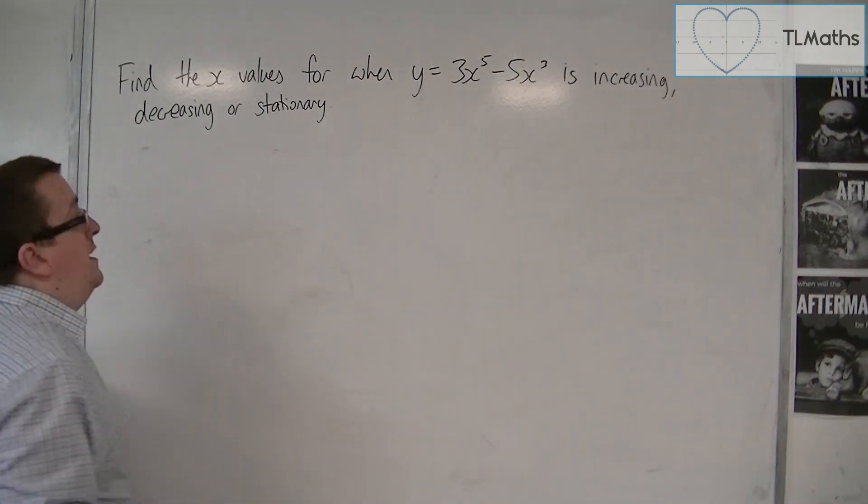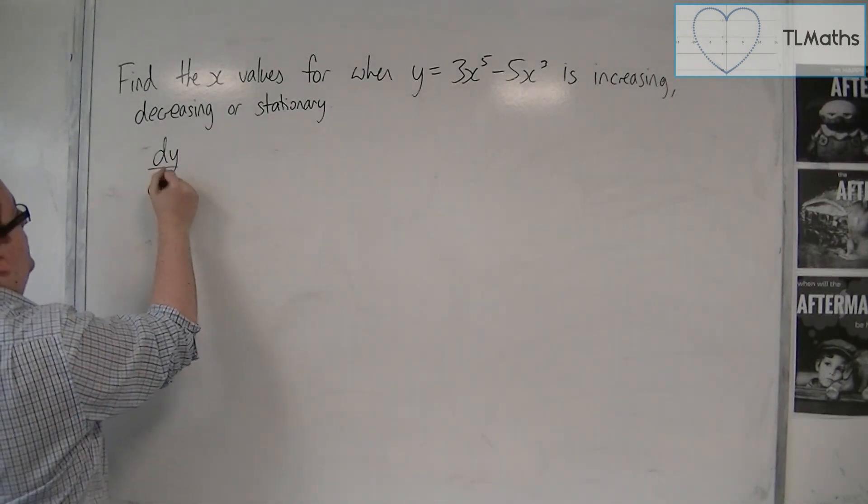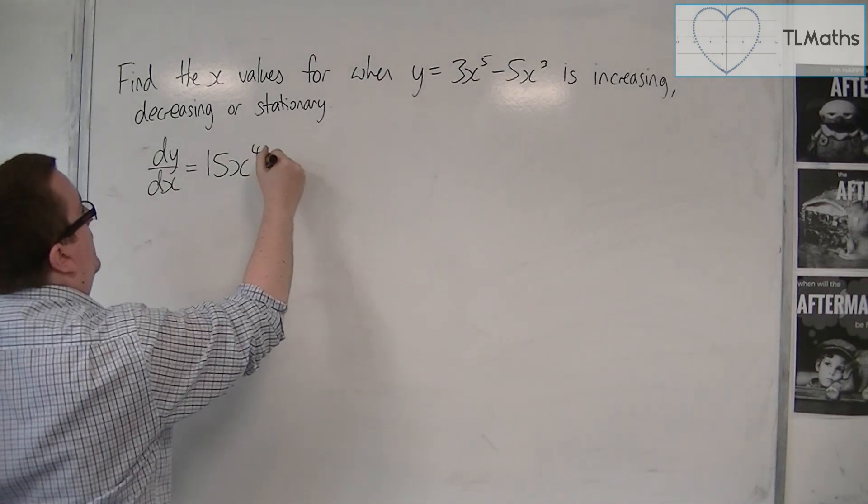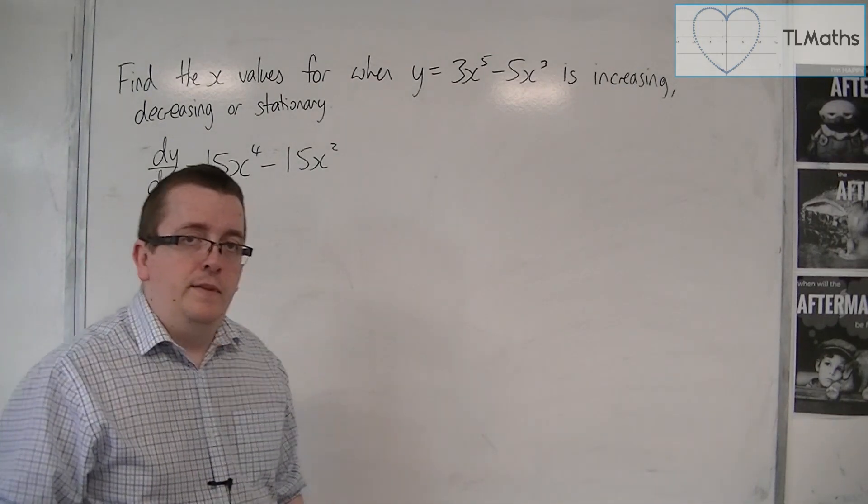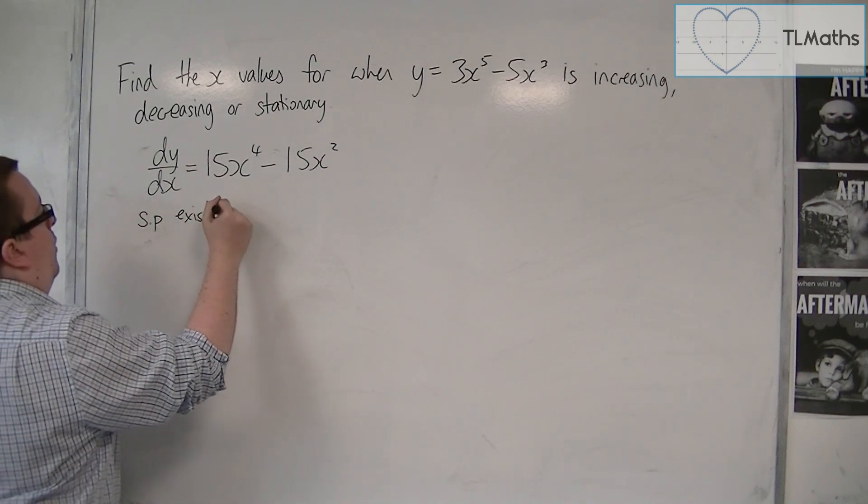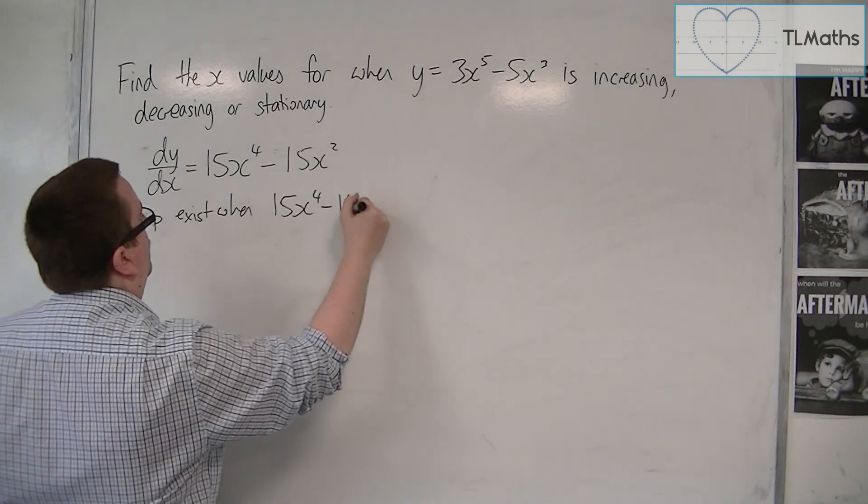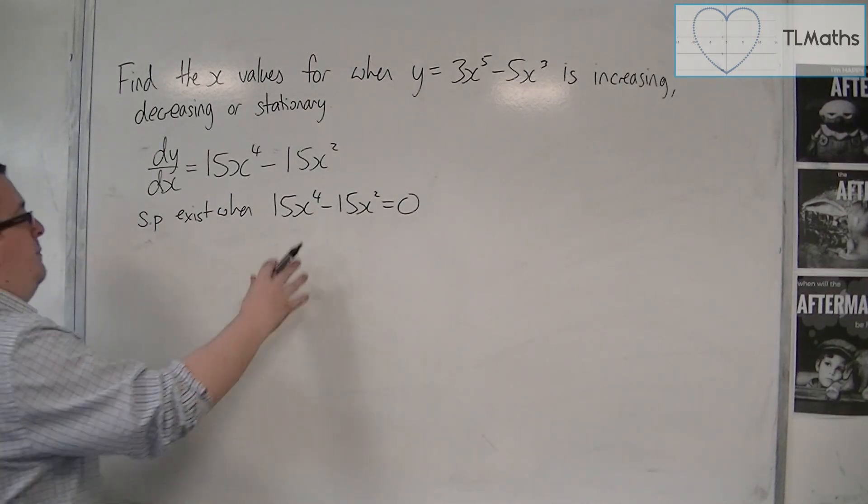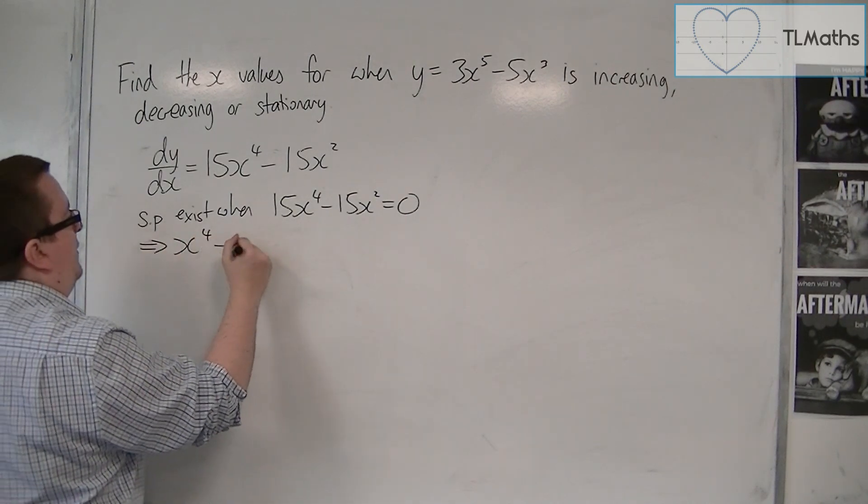So we're going to first find dy by dx. Differentiate. So dy by dx is equal to 15x to the 4 take away 15x squared. That's the first thing. Now I know that stationary points exist when dy by dx is 0. So when 15x to the 4 minus 15x squared equals 0. So what I'm going to do here is I'm going to divide through by 15 and get x to the 4 minus x squared is 0.